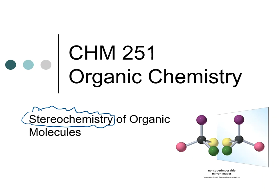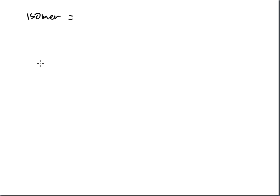Before we go further into stereochemistry - which folks are either going to love or hate - I want to review certain topics we've already discussed. One of these early terms was something called an isomer. 'Iso' means same and 'mer' means unit - same unit. This word describes compounds that have the same number of carbons, hydrogens, oxygens, nitrogens, and so forth. We were focused on hydrocarbons back then, but it also holds true for any functional group in organic chemistry.